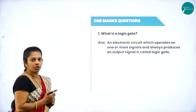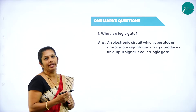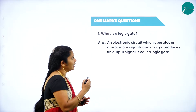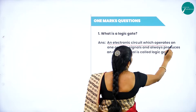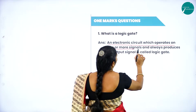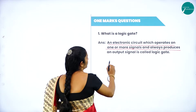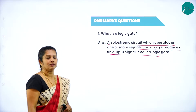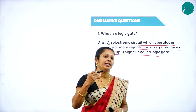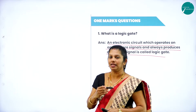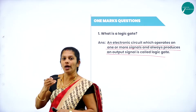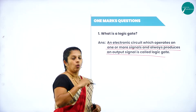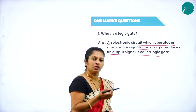The most expected one-mark question is: what is a logic gate? A logic gate is an electronic circuit which operates on one or more input signals and always produces one output signal. It takes one or more inputs, but after processing it generates only one output. The output is always one, while input may be one or more.